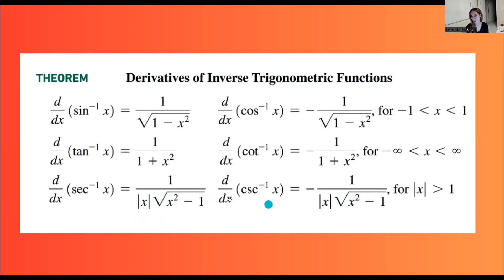And finally, when you have inverse cosecant, the derivative is equal to negative 1 divided by the absolute value of x times the square root of x squared minus 1.